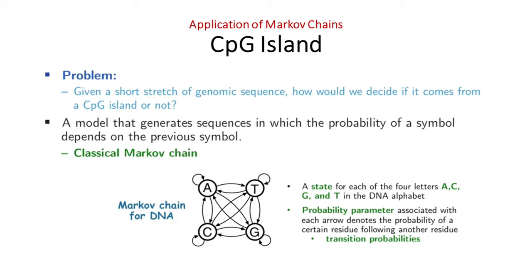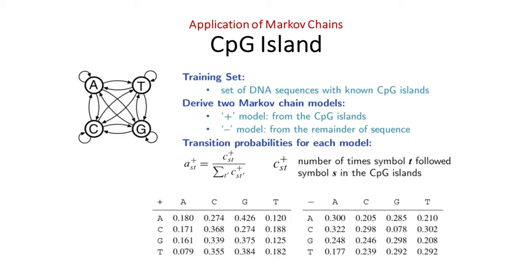However, there are some regions where this methylation process is suppressed — particularly near the promoter or transcriptional start site of many genes. These regions where methylation is suppressed are called CpG islands. In CpG islands, the CG dinucleotide appears relatively more frequently compared to the rest of the genome, so identifying CpG islands is very useful for identifying different genes. The problem is: given a short stretch of genomic sequence, can we decide whether this stretch comes from a CpG island or not? To solve this, we need a model where the probability of a symbol depends on the previous symbol.